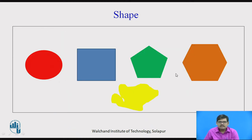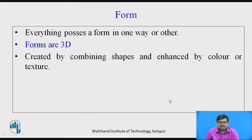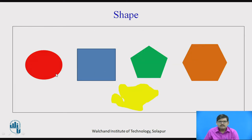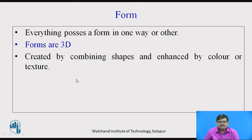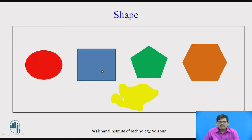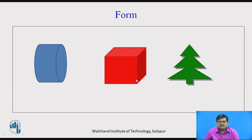These are some shapes you know: circle, square, pentagon, hexagon, and organic shape. Then, form. Everything possesses a form in one way or another. Forms are mostly 3D and are created by combining shapes, enhanced by color or texture. A circular shape becomes a cylinder — that is a form. A square shape becomes a cube — that is a form. An organic form is available in nature.